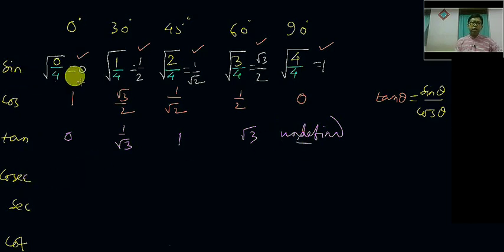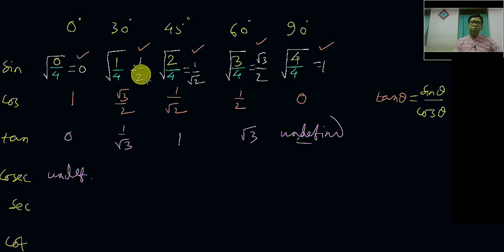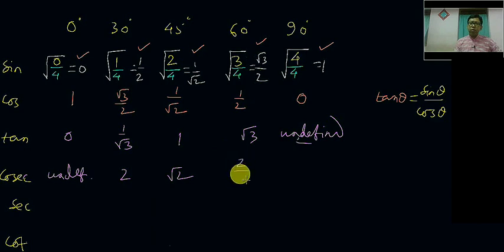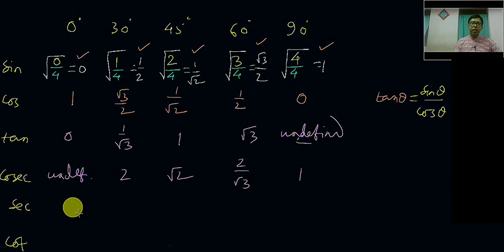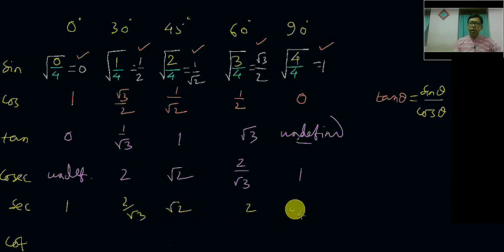Cosec is the reciprocal of sin. The reciprocal of 0 is undefined, reciprocal of 1/2 is 2, reciprocal of 1/root 2 is root 2, reciprocal of root 3/2 is 2 upon root 3, and cosec 90 degree is the reciprocal of 1, which is 1. Similarly, sec is the reciprocal of cos: sec 0 degree is 1, sec 30 degree is 2 upon root 3, sec 45 degree is root 2, sec 60 degree is 2, and sec 90 degree is undefined because the reciprocal of 0 is undefined.